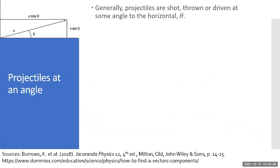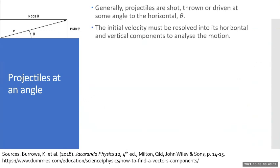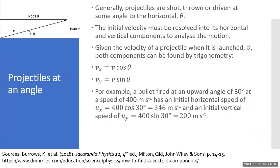Generally projectiles are shot, thrown, or driven at some angle to the horizontal. Driven, I'm thinking of golfing where you get a club and you drive the ball down the fairway. The initial velocity must be resolved into its horizontal and vertical components to analyze the motion. So we're just going to get used to using v cos θ for horizontal component, v sin θ for the vertical component. So given the velocity of a projectile when it's launched v, both components can be found by trigonometry.